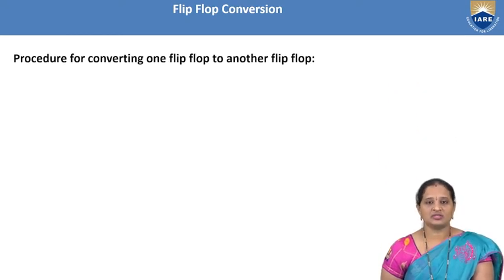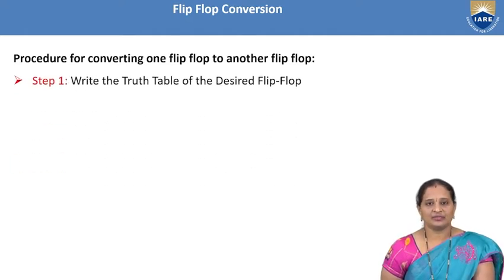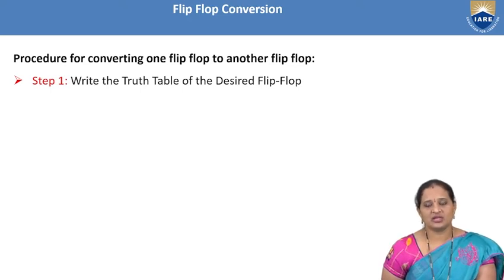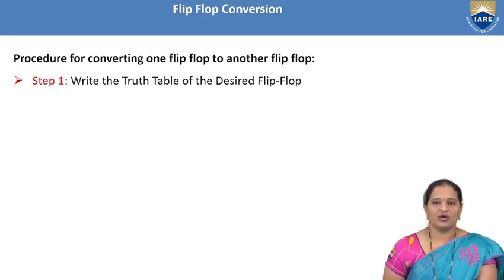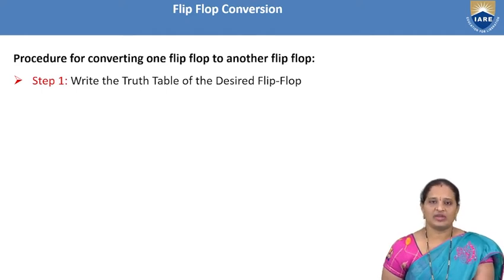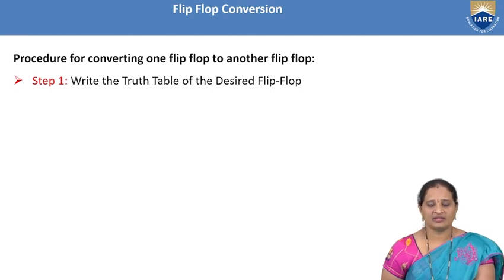Let us have a look at the procedure for conversion of one type of flip-flop into another flip-flop. The first step is to write the truth table of the desired flip-flop. The truth table is a table which shows the possible outputs for all possible combinations of input variables. First we need to write down the truth table of the desired flip-flop.